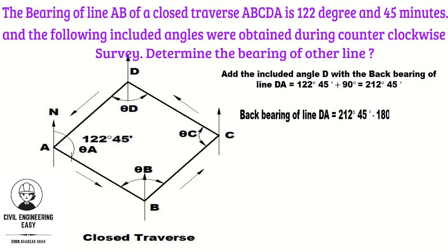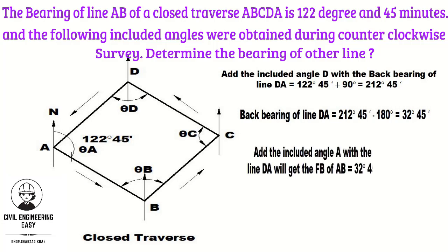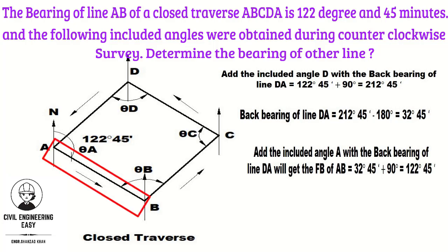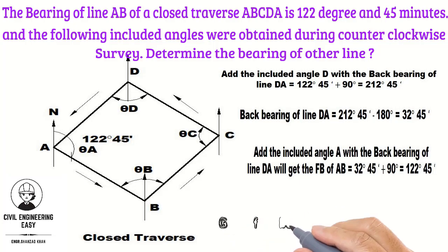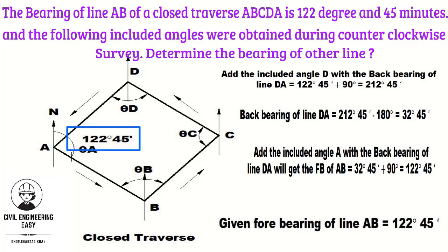For the backbearing of line DA, subtract 180 degrees from the forebearing of line DA: 212.45 min minus 180 degrees gives 32.45 min as the backbearing of line DA. Add the included angle of 90 degrees with the backbearing of DA to get the forebearing of line AB: 32.45 min plus 90 degrees equals 122.45 min. This forebearing of line AB was given to us, and hence the traverse is fully solved and verified.